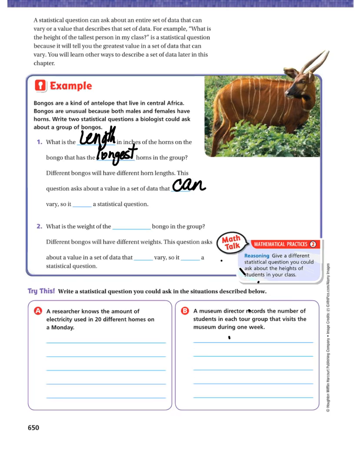Example 1. 'What is the weight of the smallest one in the group?' Different individuals will have different weights. This question asks about a value in a set of data that can vary, so it is a statistical question.